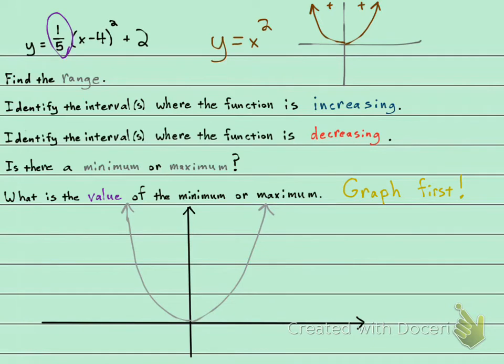First, let's show what's happening with the one-fifth. This one-fifth is going to squish it down and it's going to shrink it. So the graph is going to be more like this.